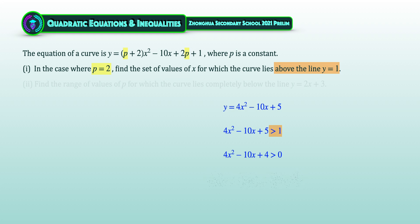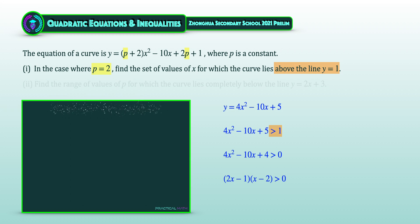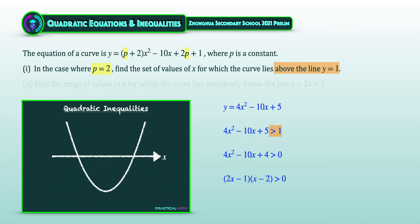Then we factorize it to be a product of (2x − 1)(x − 2) > 0. To solve this quadratic inequality, we'll sketch y = 4x² − 10x + 4 and write in the x-intercepts of ½ and 2, found from the factorization.